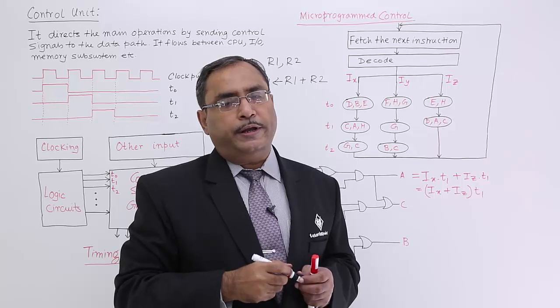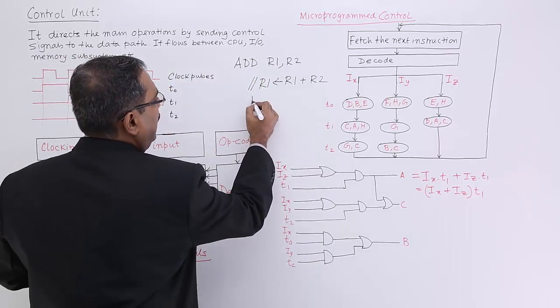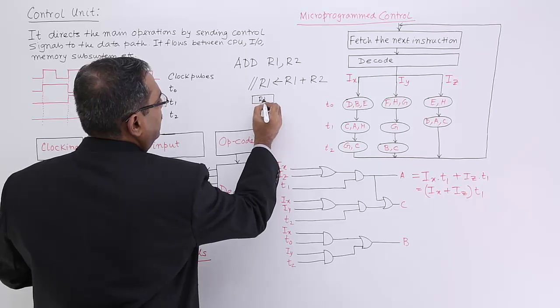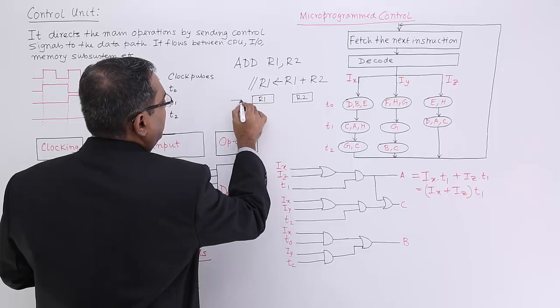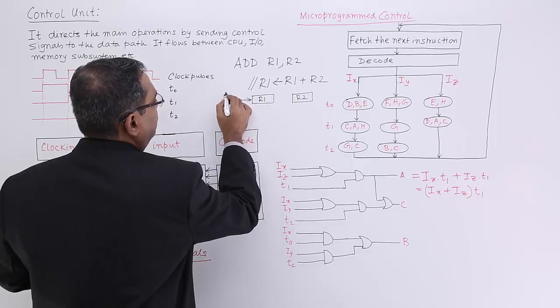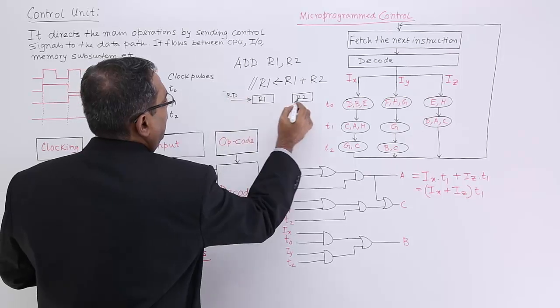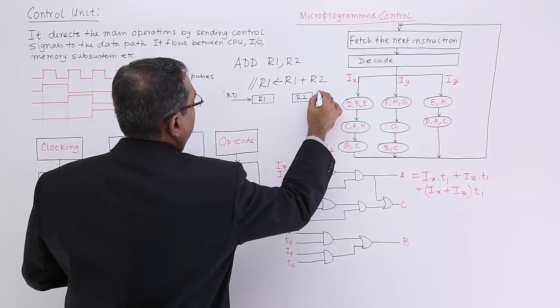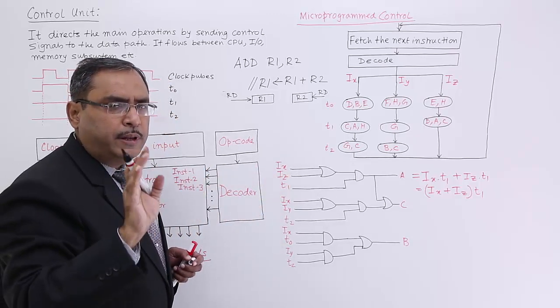How will these circuits be operating? I can show in this way: let us suppose there is a register R1, there is a register R2. At first I should select this register in the read mode. I should select this register in the read mode and also this register in the read mode. I am just giving you a very simple example.